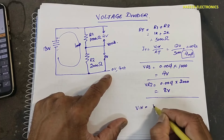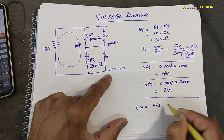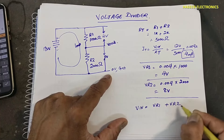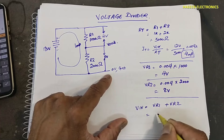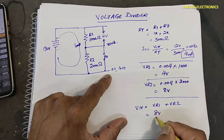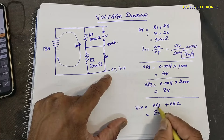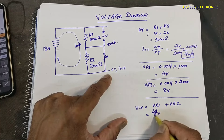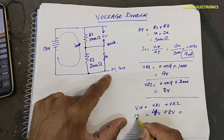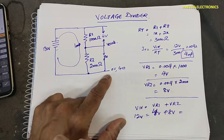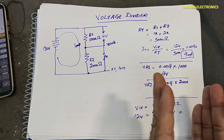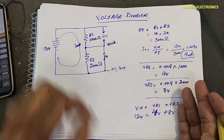We verify: V_in equals VR1 plus VR2 — that is 4 volts plus 8 volts equals 12 volts. The applied voltage equals the total dropped voltage in the circuit. This confirms the first method.